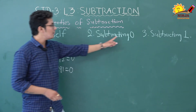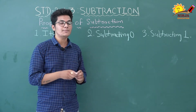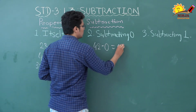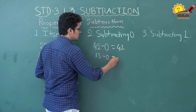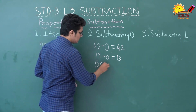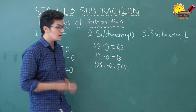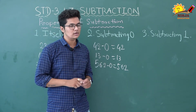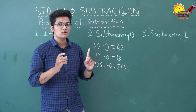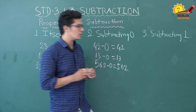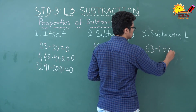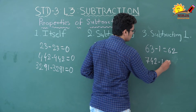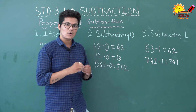Second property: if you subtract zero from any number, the answer will be the number itself. For example, 42 minus 0 is 42, 13 minus 0 is 13, 562 minus 0 is 562. Third property: if you subtract 1 from any number, you will get the predecessor of that number. For example, 63 minus 1 is 62, and 62 is the predecessor of 63. Similarly, 742 minus 1 is 741.